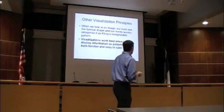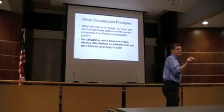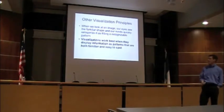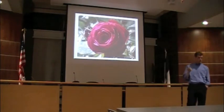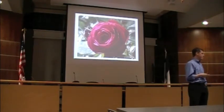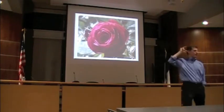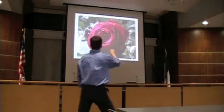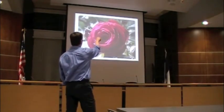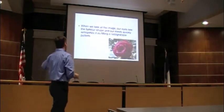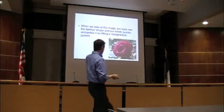When we look at an image, our eyes tend to see familiar shapes and our minds quickly categorize them into patterns. For instance, looking at a picture of a rose — do you see a dolphin? Once I point it out, you see it: there's the fin, there's the nose. But initially you categorized it as a rose. Visualizations work best when they display information as patterns that are familiar and easy to spot.